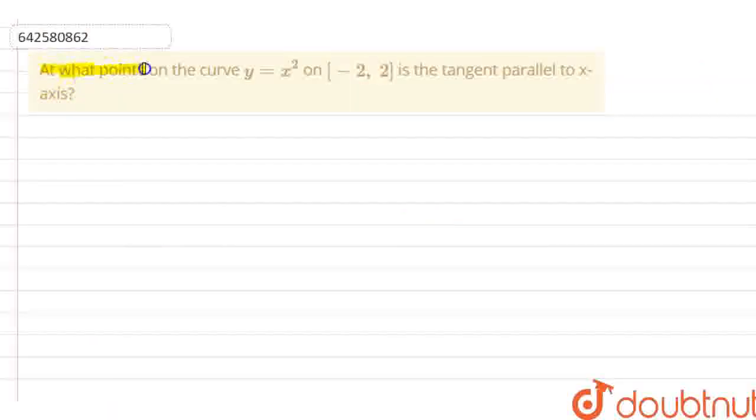The question is, at what points on the curve y equals x squared on minus 2 to positive 2 is the tangent parallel to the x-axis.